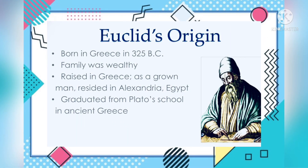The Greek mathematician Euclid was born in Greece in 325 BC from a wealthy family. He was raised in Greece as a grown man and resided in Alexandria, Egypt. He later graduated from Plato's school in ancient Greece.